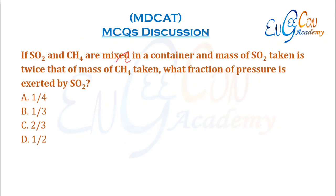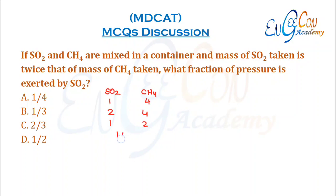If SO2 and CH4 are mixed in a container, and the mass of SO2 taken is twice that of CH4, what fraction of pressure is exerted by SO2? Normally with equal masses, the mole ratio is 1:4. Since the mass of SO2 is twice, it becomes 2:4 or 1:2, so the fraction of pressure exerted by SO2 is 1/3 of the total pressure.